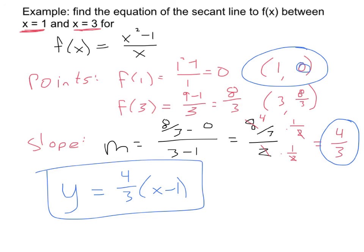And that's the equation of the secant line. What we did was we found the two points, we found the slope between them, and then we used point slope form to write the equation of that secant line.